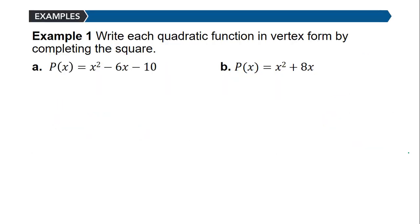In this example, we want to write each quadratic function in vertex form by completing the square. Example A: we have the function p of x equals x squared minus 6x minus 10. Think of the steps we used for solving quadratic equations by completing the square. The first step is to remove the constant — this negative 10 needs to be removed by adding 10 to each side, giving us p of x plus 10 equals x squared minus 6x.